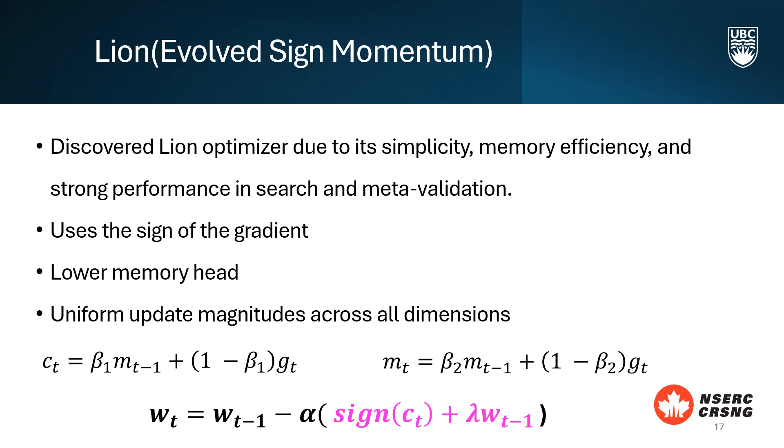In the formula, you can see that we are using the sign of ct rather than directly using the variable m in the formula. It uses beta 1 to balance the current and past gradients in ct. This ensures that the immediate gradient information has a significant impact while still considering the momentum from past gradients. LION uses beta 2 for updating the momentum. This keeps a long history of past gradients through mt, which helps to smooth out the updates over time.